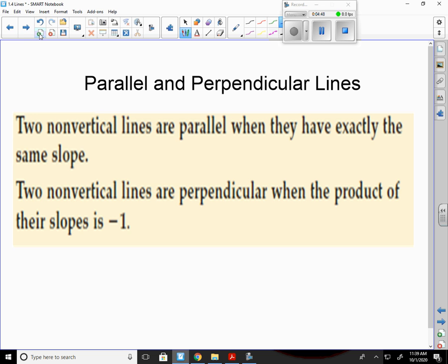Parallel and perpendicular lines. Two non-vertical lines are parallel when they have exactly the same slope. Two non-vertical lines are perpendicular when the product of their slopes is negative 1. So they're parallel if they have the same exact slope. And they're perpendicular if we can take their slopes and multiply them together and get negative 1. We also call the slopes of perpendicular lines reciprocals over each other. They're negative reciprocals of each other.